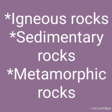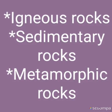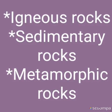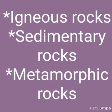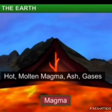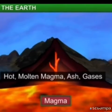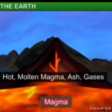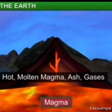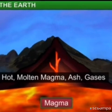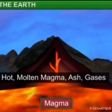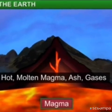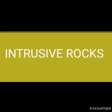When the molten magma cools, it becomes solid. Rocks thus formed are called igneous rocks. They are also called primary rocks. There are two types of igneous rocks: intrusive rocks and extrusive rocks.